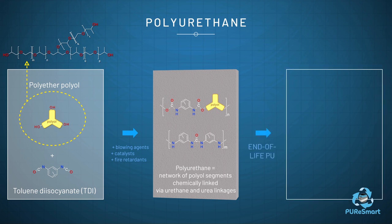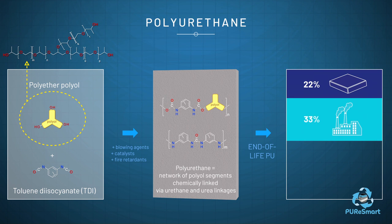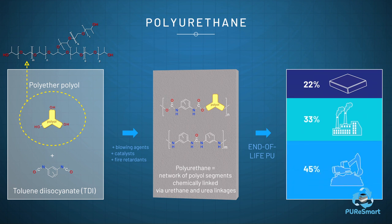The thermoset nature of polyurethane foams does not allow for recycling by melting. As a result, just 22% is mechanically recycled, 33% incinerated and 45% of end-of-life PU landfilled. Therefore, a range of chemolysis methods have been developed with the goal of recycling the building blocks by depolymerisation of the polyurethane foams.